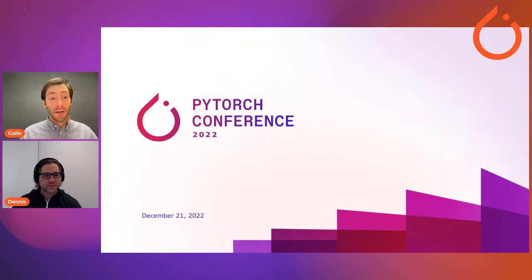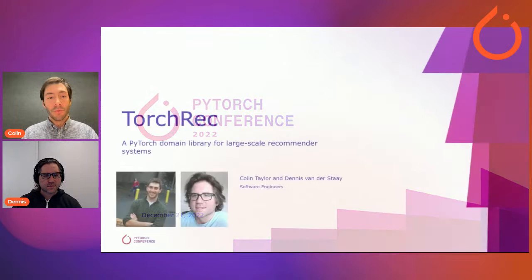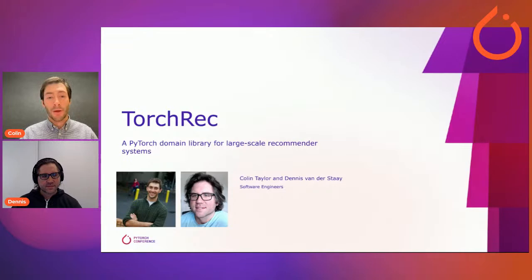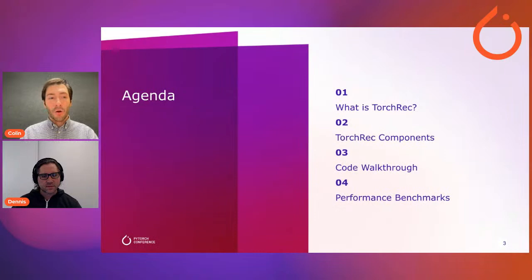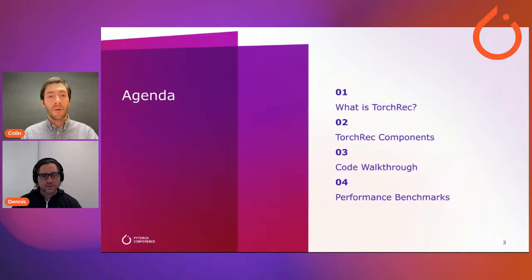Thanks everyone. So just a brief overview of today: we're going to start by talking about TorchRec. I'll give a brief presentation for about 15 minutes, pass it to the FSDP team, and then we'll have 30 minutes of Q&A. I'm Colin, and this is my colleague and contributor Dennis. We work on TorchRec, which is PyTorch's newest domain library for recommender and recommendation systems. Today we'll give a brief overview of TorchRec, do a deep dive into core components, go over a code walkthrough on transforming your model's embedding layers, and showcase performance benchmarks.